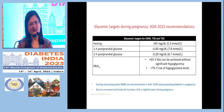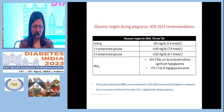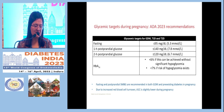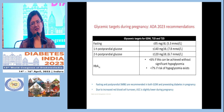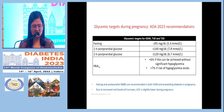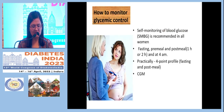Glycemic cutoffs in pregnancy are more stringent than in the normal diabetic population: fasting less than 95, one-hour postprandial less than 140, two-hour postprandial less than 120, and HbA1c less than 6% if achievable without risk of hypoglycemia.